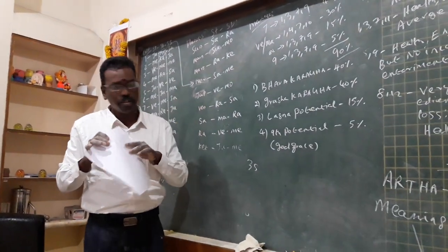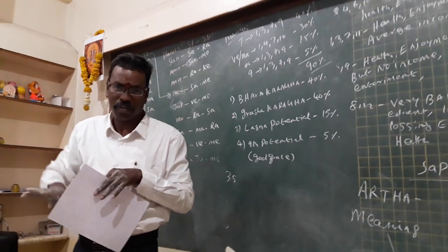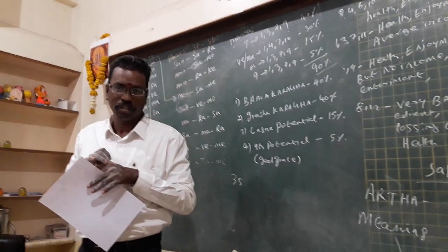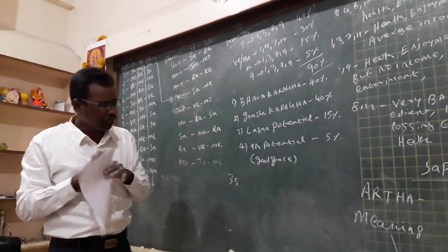I am telling, in this case, for any question, potential of the bhava should be... Actually, in 12 bhava, we are dividing two categories.